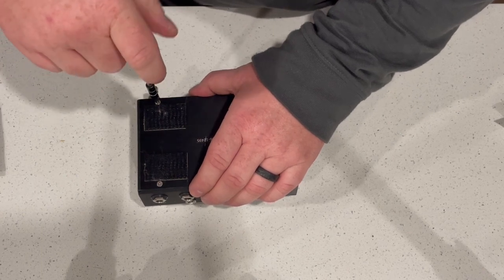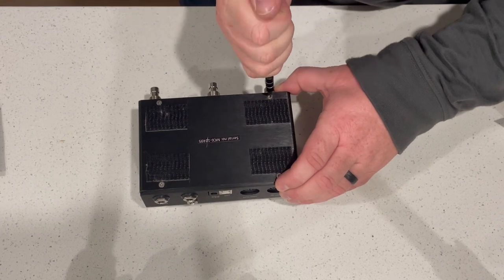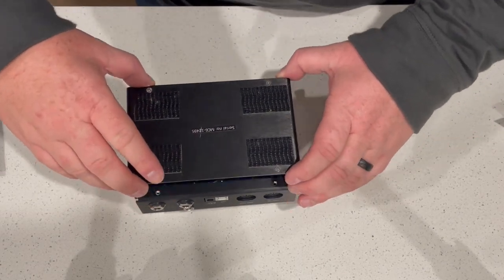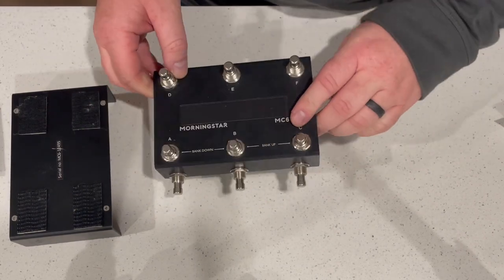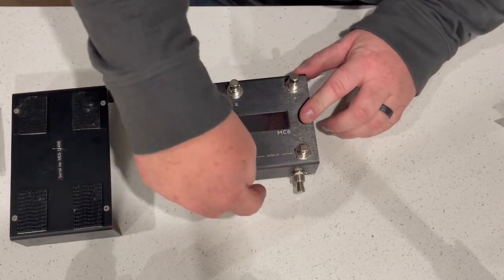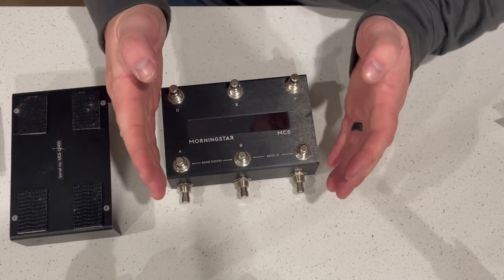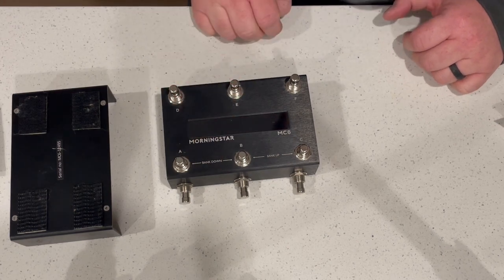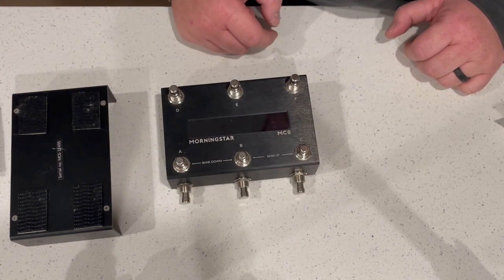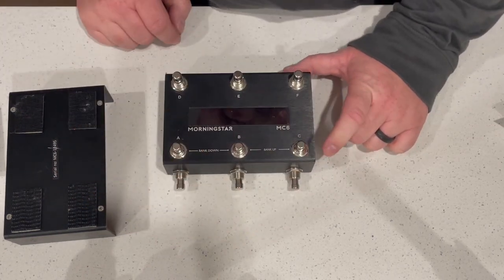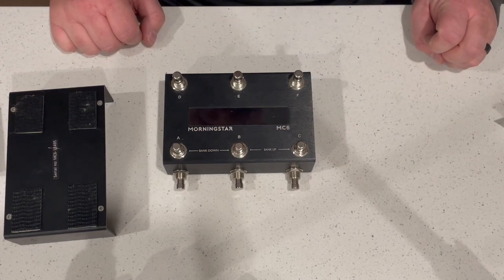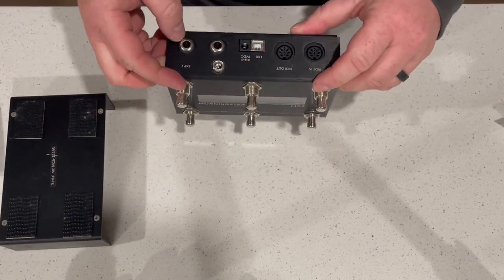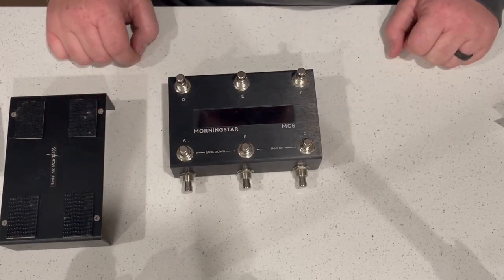In terms of the programming one of the things that I wasn't really aware of and probably should have thought about more was these switches can't be a global feature. These switches one, two, three become G, H and I when you are plugged in and set on a bank and then when you bank across they stay as G, H and I. I was hoping that I could set them as global buttons and if Morningstar if you're watching this I know you guys are great with implementing different features that we ask for.